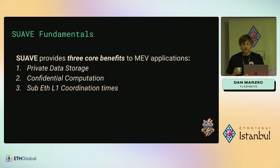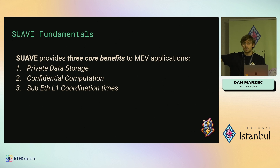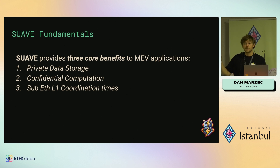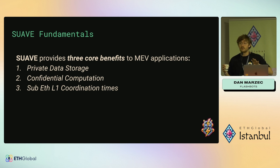Suave provides three core benefits to MEV applications. The first is private data storage — your MEV application on Suave has access to a place where you can store encrypted information and also process encrypted information when you upload a program to Suave. The second is confidential computation: you can put a program on there, it operates on this private data, and ideally it leaks no information out — although you can design an MEV application to purposefully leak information, and there are use cases for that.